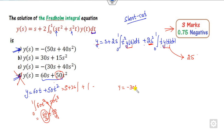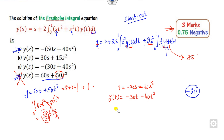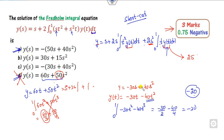Now look at the second option: y(t) = −30t − 40t². Substituting this value, I need the coefficient to give −20. If I multiply by t and integrate, I get −30/3 − 40/4, which is −10 − 10 = −20. So the first condition is satisfied.